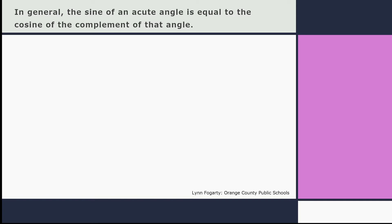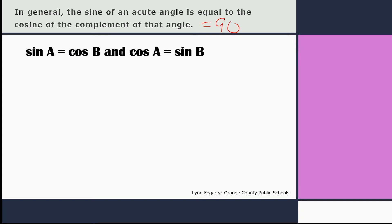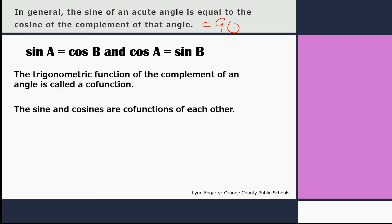In general, the sine of an acute angle is equal to the cosine of the complement of that angle. Those two angles together equal 90 degrees because they are complements of each other. The sine of angle A is equal to the cosine of angle B, and the cosine of angle A is equal to the sine of angle B. This refers to the two acute angles in a right triangle.